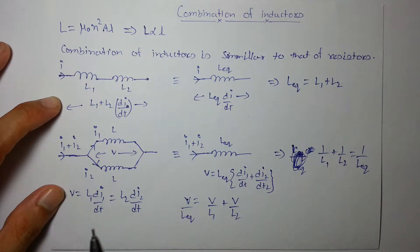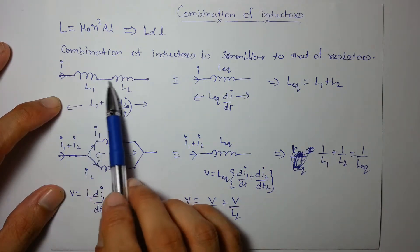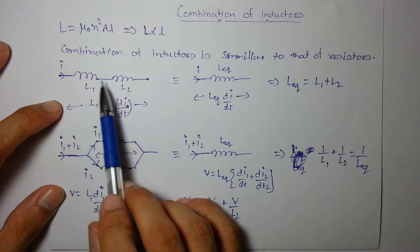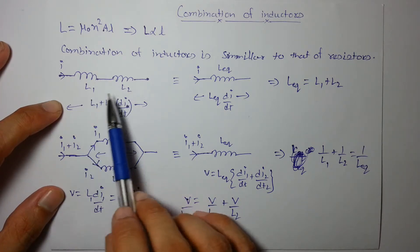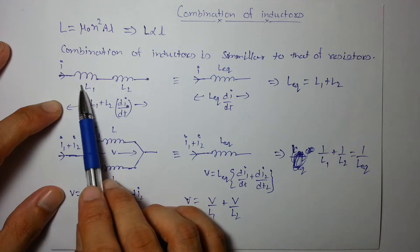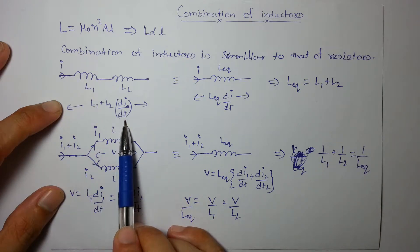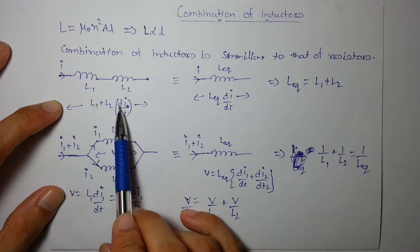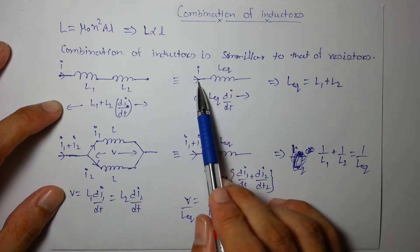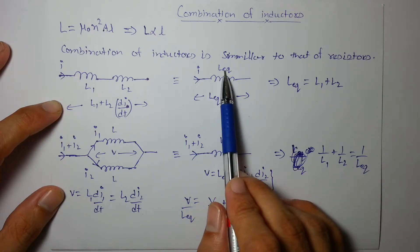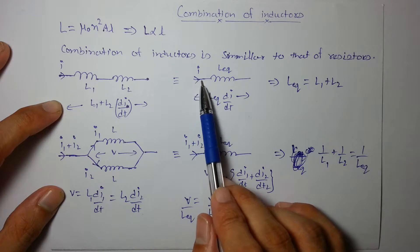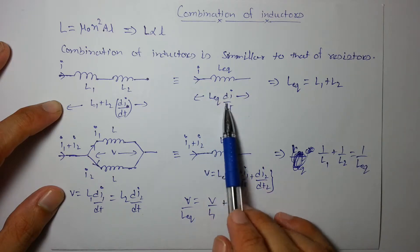Combination of inductors is quite similar to that of resistances. For example, when they are in series, the current passing through them is the same. So we can say the voltage across this will be L₁ di/dt and voltage across this will be L₂ di/dt.